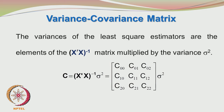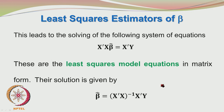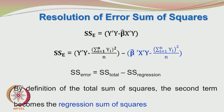The variance-covariance matrix is very important for examining the variances of the estimated parameters. If the variances are small, the parameters have been estimated quite precisely. The variance-covariance matrix is given by (X'X)-inverse multiplied by sigma-squared. The sum of squares of error is given by Y'Y minus beta-hat-prime times X'Y.